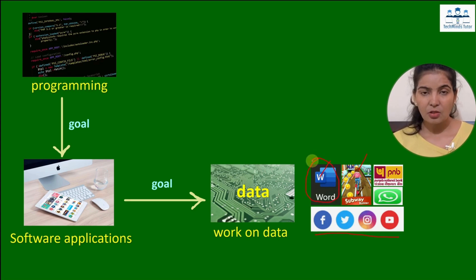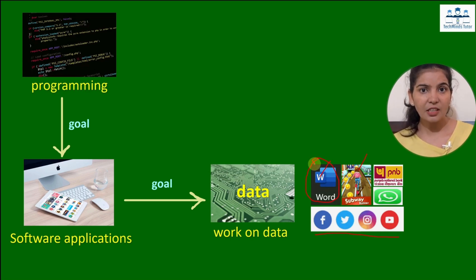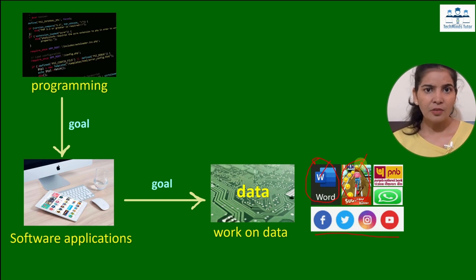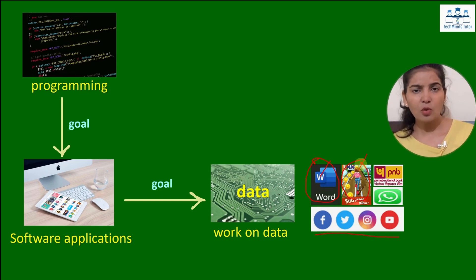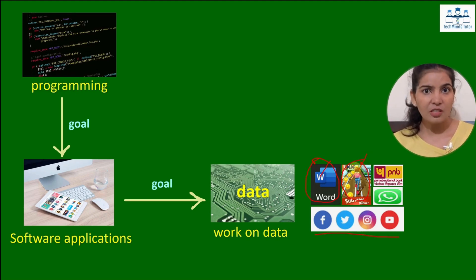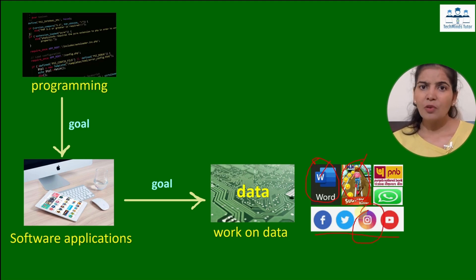If we talk about the word application, the data is the text — we are changing, editing, and printing the text. If we talk about a game app like Subway Surfer, the runner moving left or right, collecting coins, jumping on a train — all of these are data. This app is working around this data.